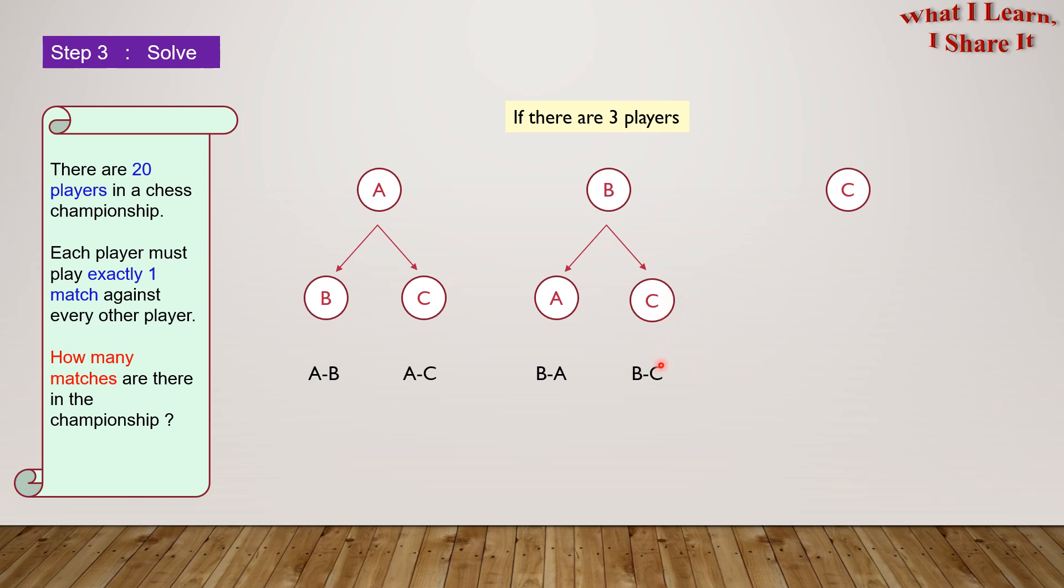Let's see who C plays with. First, C will play with A and we'll get a C-A combination. Then C will play with B and we'll get a C-B combination. Since each player plays exactly one match against the other player, let's try to remove the duplicates. The A-B combination is okay because it's unique. So is the A-C combination.